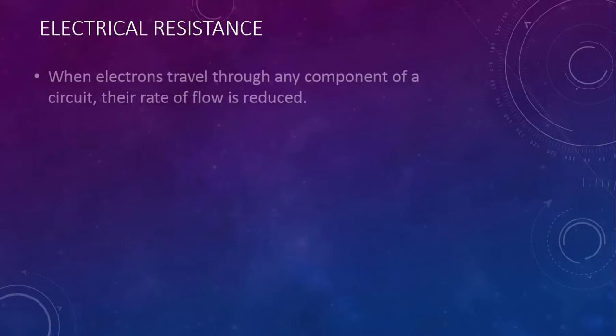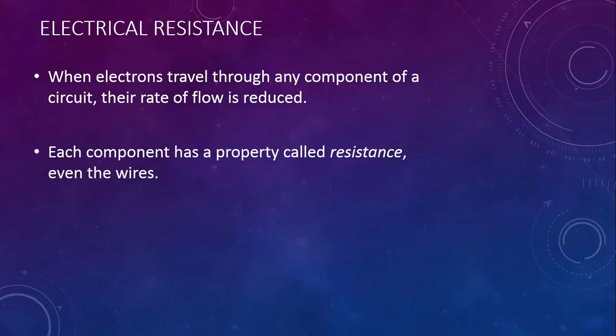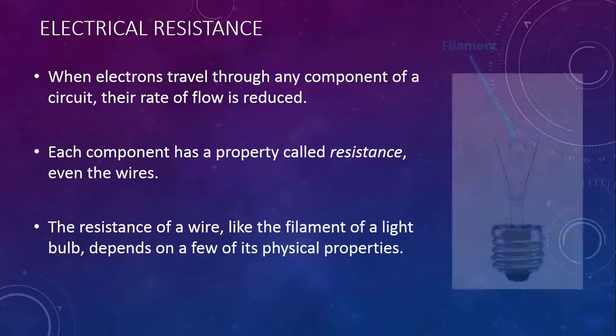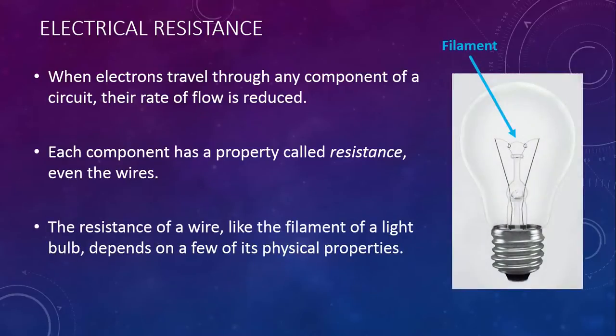Electrical resistance. When electrons travel through any component of a circuit, their rate of flow is reduced. Each component has a property called resistance, even the wires. The resistance of a wire, such as the filament of a lightbulb, depends on a few of its physical properties.